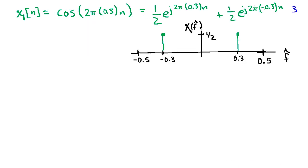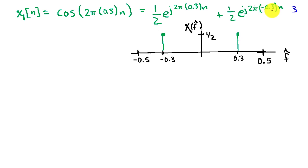Let's apply this idea to a cosine. We'll use cosine of 2 pi times 0.3 times n. Expanding using the Euler representation, we get 1/2 e to the j 2 pi times 0.3 n plus 1/2 e to the j 2 pi times minus 0.3 n. This has two components in the spectrum: one at plus 0.3 with amplitude 1/2, and another at minus 0.3. Both of these frequencies are within the range minus 0.5 to 0.5.